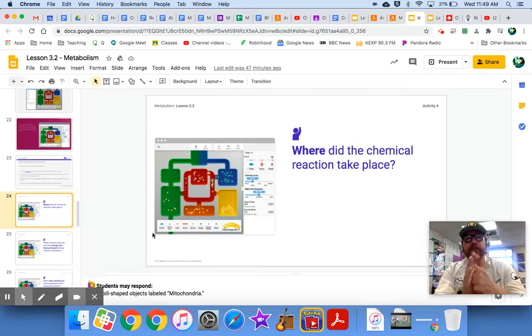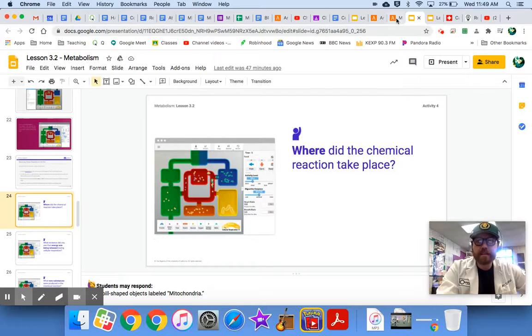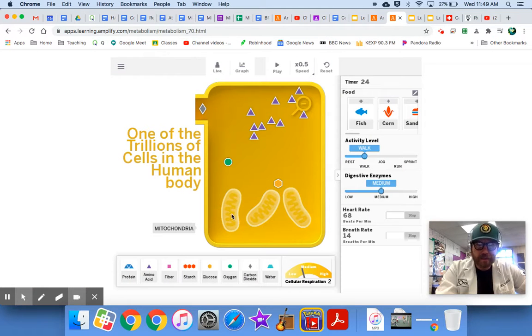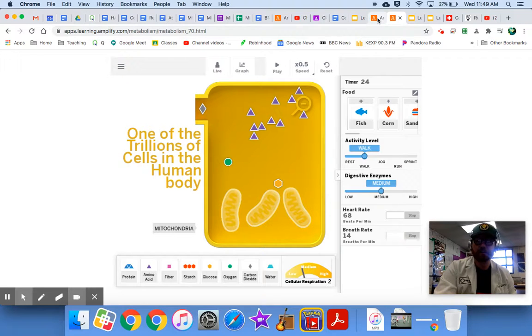Let's talk about some of these questions first. Where did the chemical reaction take place? If you notice, in the simulation, the chemical reaction, it seems like it's happening in these little squiggly sausage looking things. These are actually called the mitochondria. They are an organelle in your cells. We'll talk about that a little bit more.